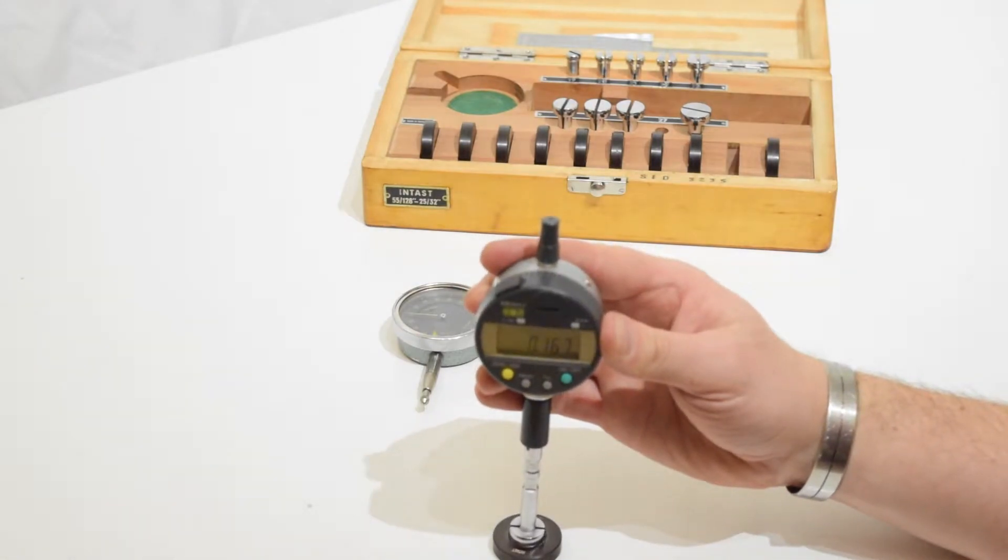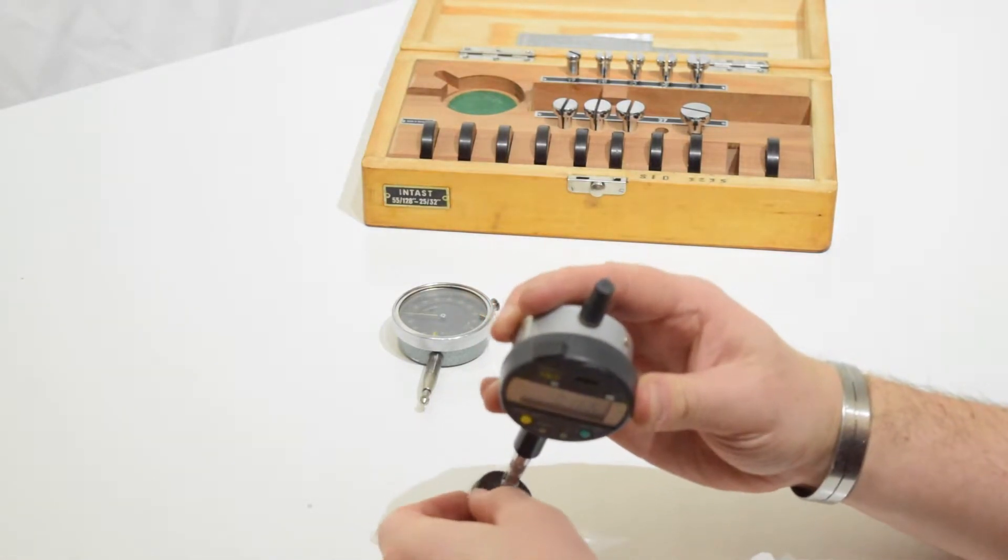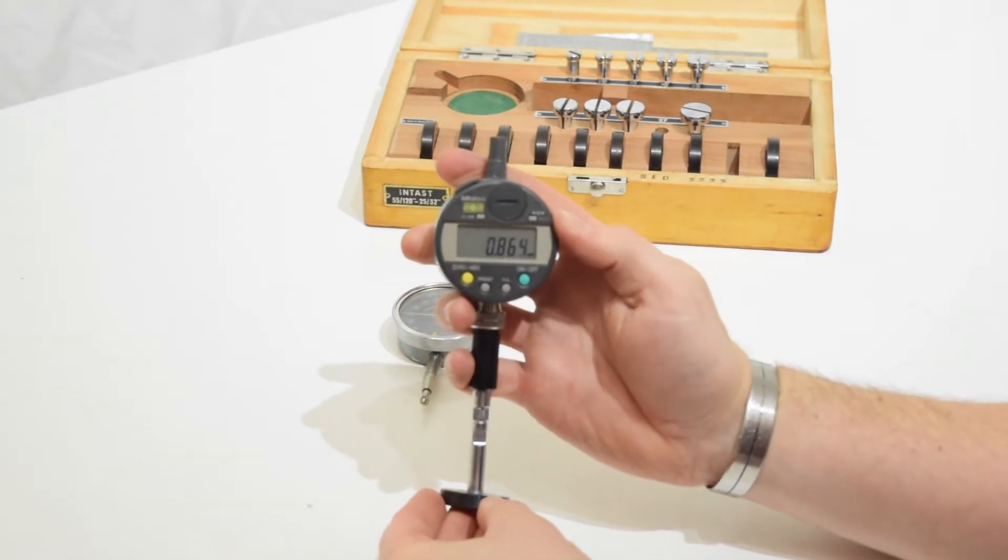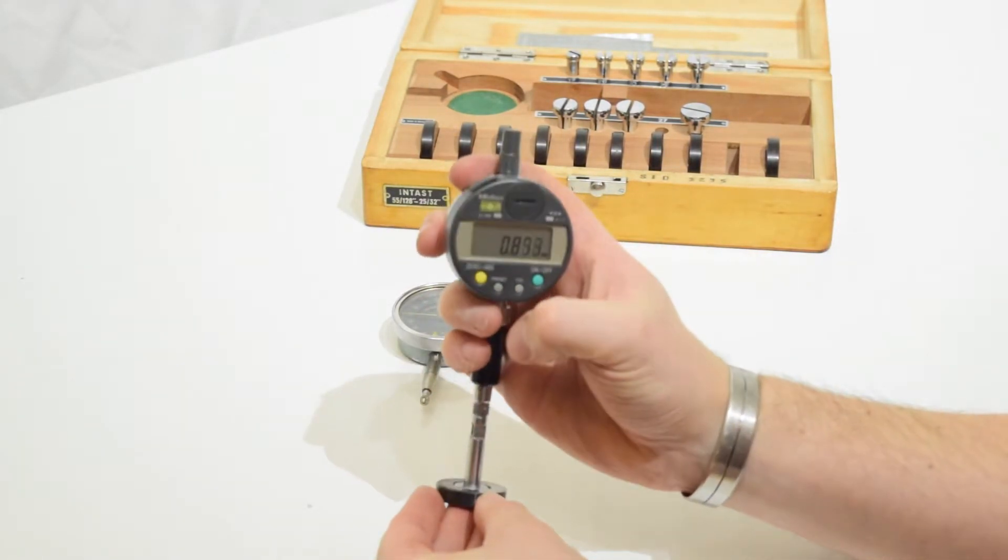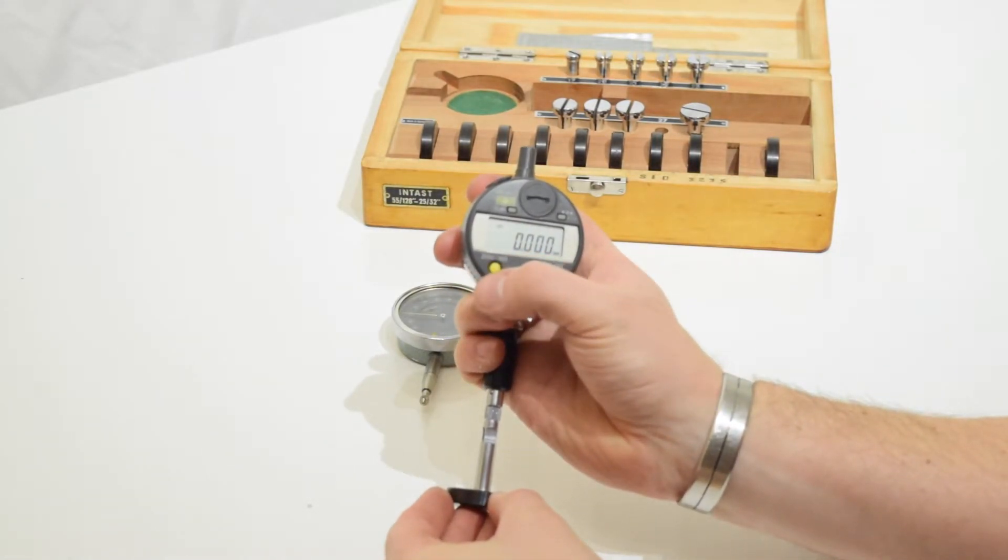And I can set the gauge now to zero. But the IDC indicator has some great features to it, which adds to the versatility of this set. It also measures to one micron, which is a higher accuracy than the included indicator.